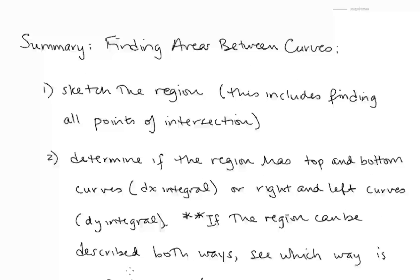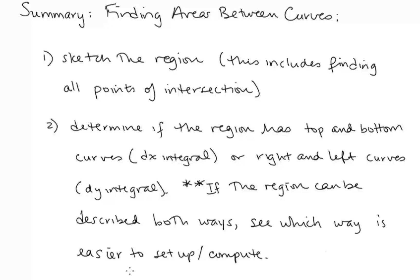To summarize finding area between curves: first, sketch the region and find all points of intersection. Then determine whether the region has top and bottom curves — giving a dx integral — or right and left curves — giving a dy integral. If the region can be described both ways, choose whichever is easier to set up and compute.